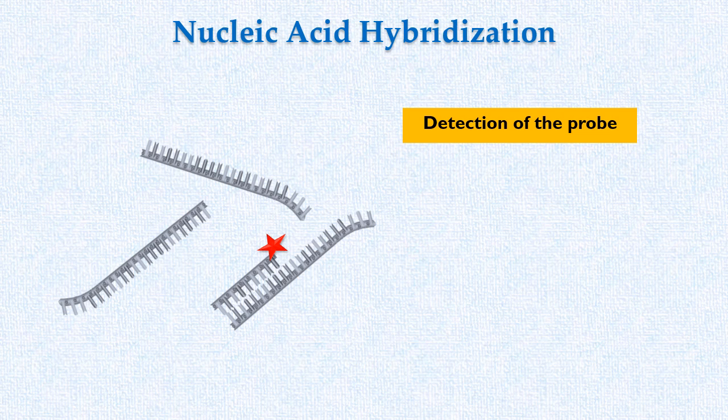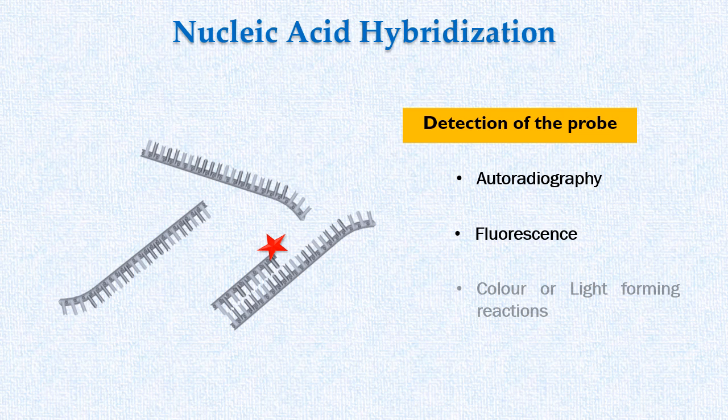For example, if probe is radiolabeled, it is detected by autoradiography. If the probe is labeled with the fluorescent tag, it is detected by fluorescence. And if the probe is labeled with enzyme, then they are detected by color or light forming reactions catalyzed by the enzyme.